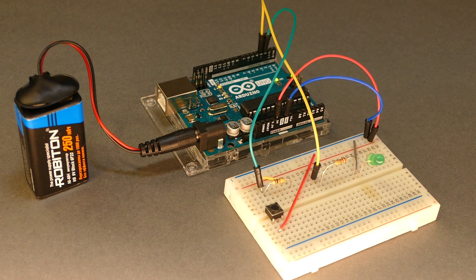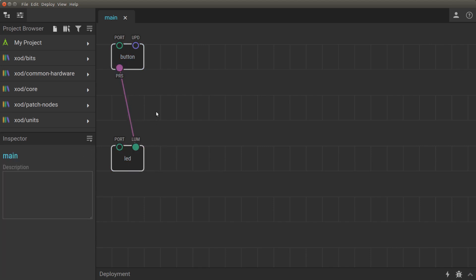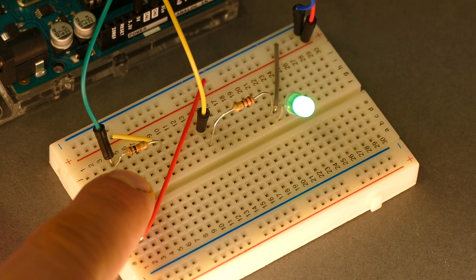Here is a simple circuit with a momentary button and LED connected to the Arduino board. According to the circuit, we place two nodes, button and LED, and link them, so the LED lights up when the button is pressed.